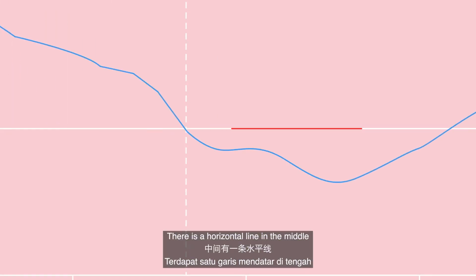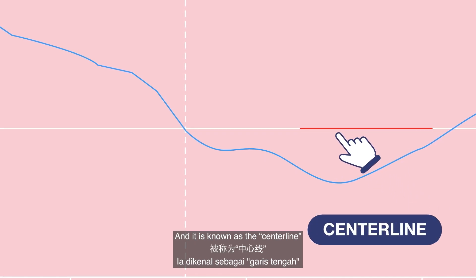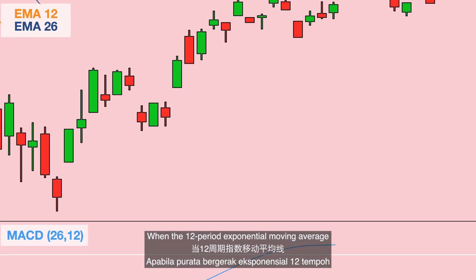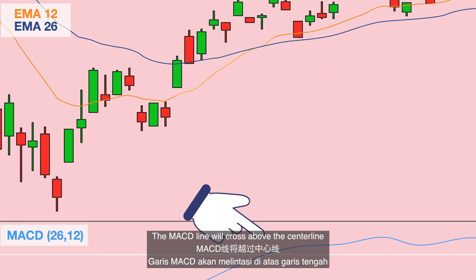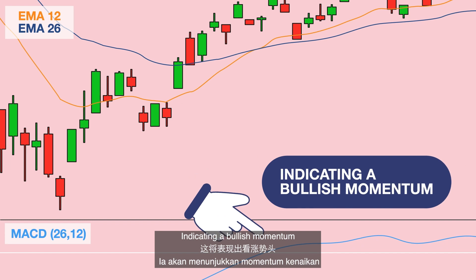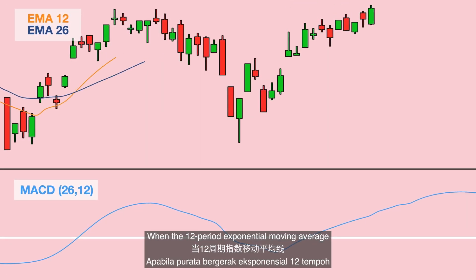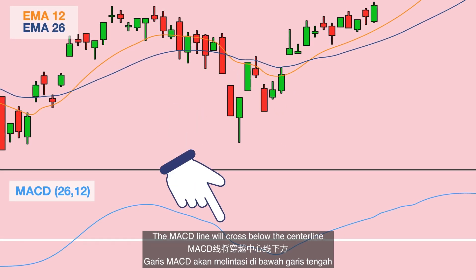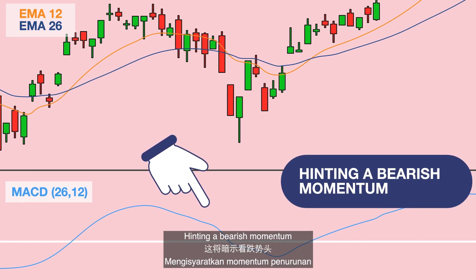In the MACD indicator, there is a horizontal line in the middle, known as the center line. When the 12-period exponential moving average crosses above the 26-period exponential moving average, the MACD line will cross above the center line, indicating a bullish momentum. When the 12-period exponential moving average crosses below the 26-period exponential moving average, the MACD line will cross below the centerline, hinting a bearish momentum.